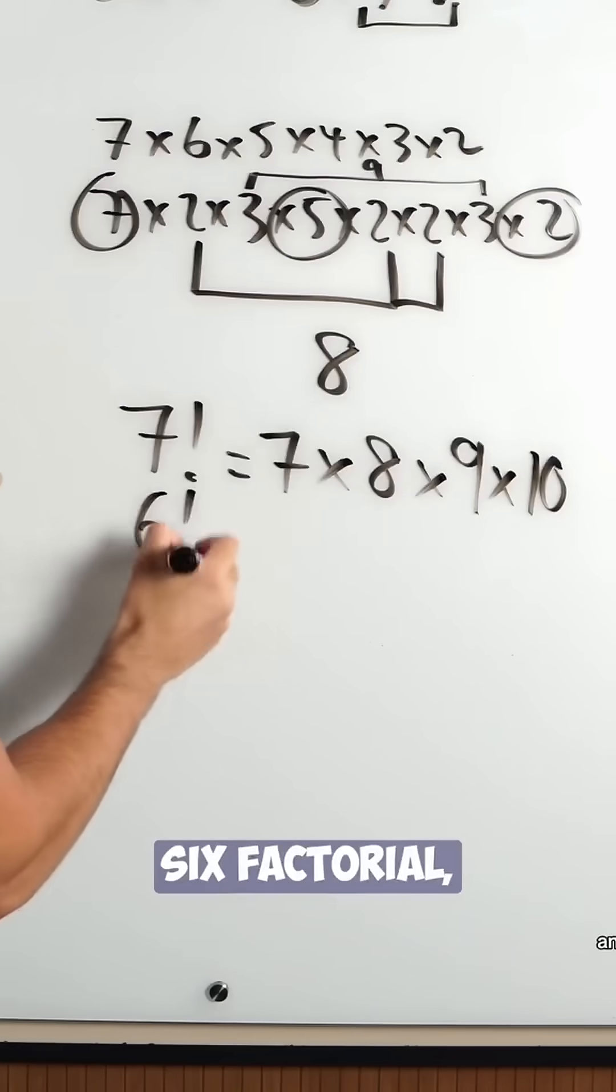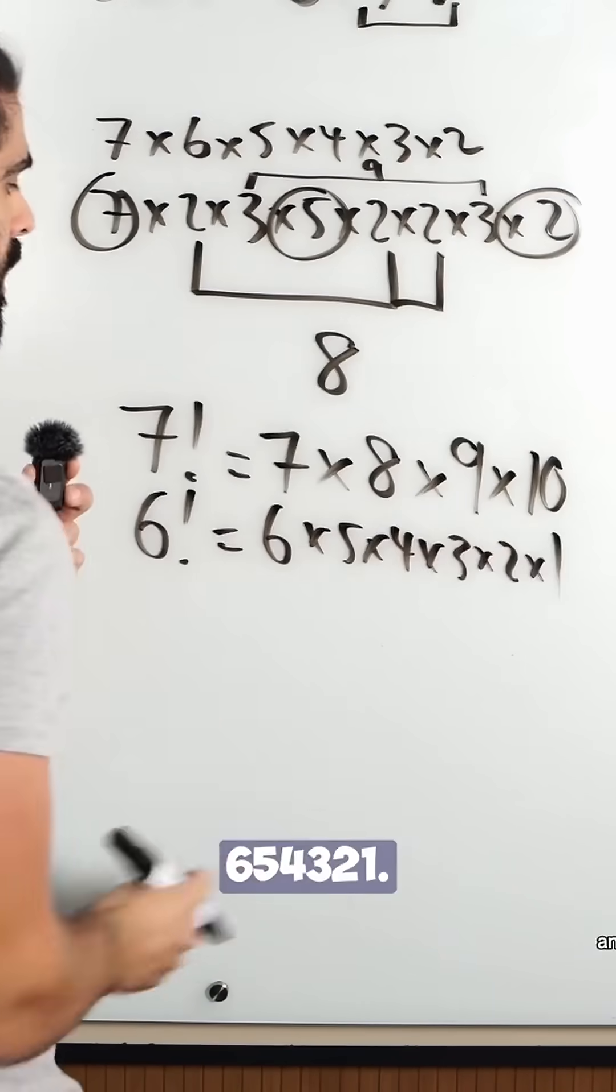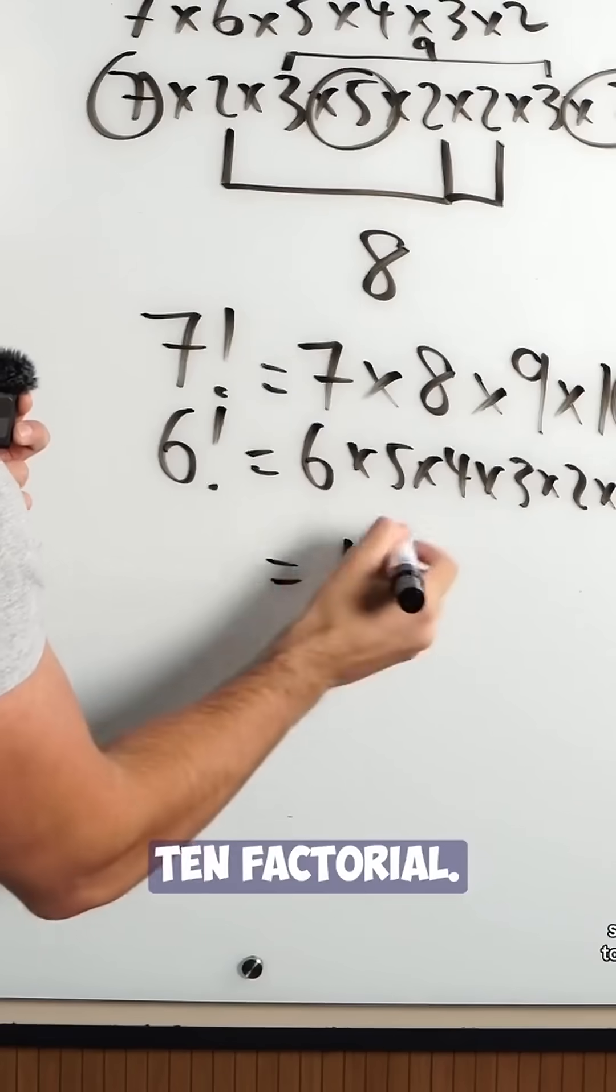And we know 6 factorial is 6, 5, 4, 3, 2, 1. So when I multiply all these together, I get 10 factorial.